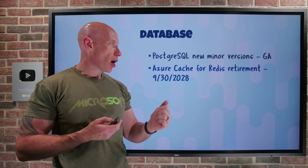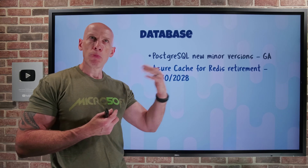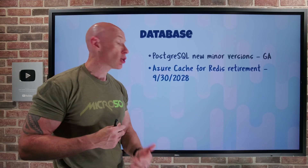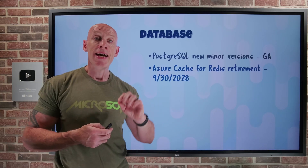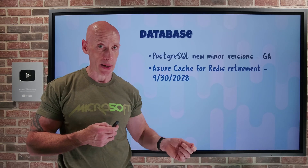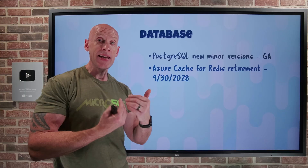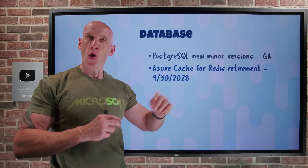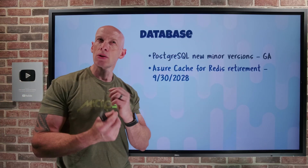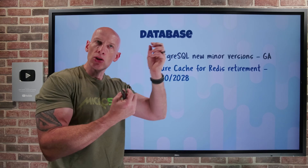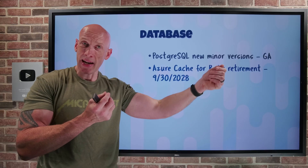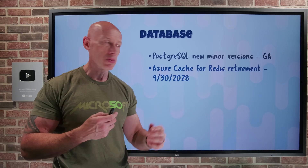Azure Cache for Redis is being retired. The Basic, Standard, and Premium tiers — which run on the open source version of Redis — are retiring end of September 2028. The Enterprise SKUs are retiring end of March 2027, which is earlier. What you want to move to is the new Azure Managed Redis. With Azure Managed Redis, all SKUs are built on Enterprise and have the same capabilities. You pick different VM SKUs based on the ratio of memory to processor, balancing capacity with performance.